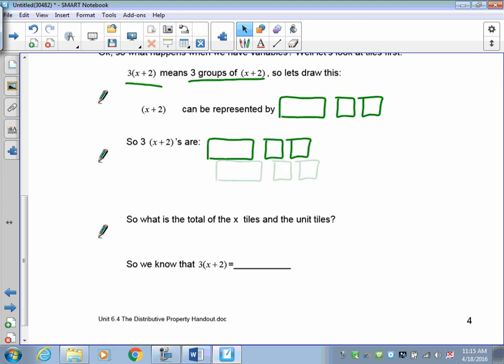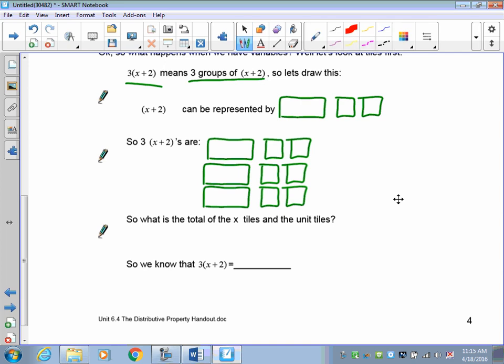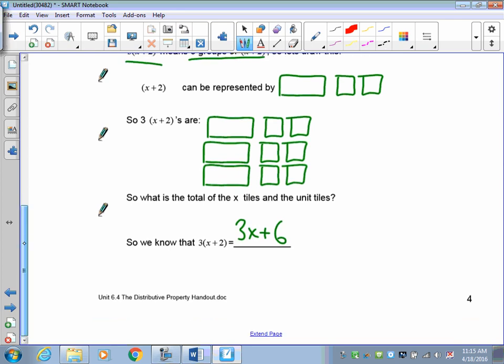Okay, so there's 1, 2, 3. So we total it all up. You're going to find that I have 3 x's plus 6. So we know that 3 onto x plus 2 is 3x plus 6.